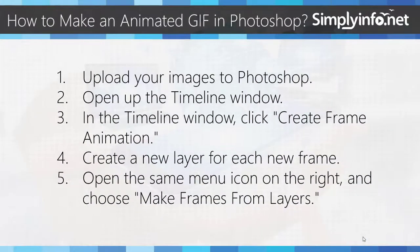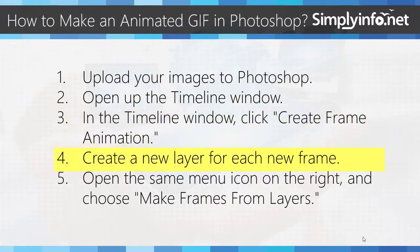How to make an Animated GIF in Photoshop: Upload your images to Photoshop. Open up the Timeline window. In the Timeline window, click Create Frame Animation. Create a new layer for each new frame. Open the same menu icon on the right and choose Make Frames from Layers.